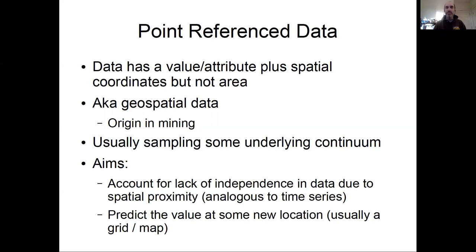This is analogous to where we ended up in time series analysis: you could have a process model as we've discussed throughout the course, but you need a data model that accounts for autocorrelation. So one aim with point reference data is acknowledging that most of our data is point data, but sometimes we need to account for spatial locations and lack of independence. In this version, the spatial nature is really treated almost as a nuisance we need to account for.